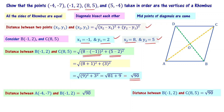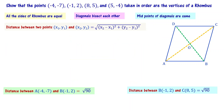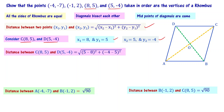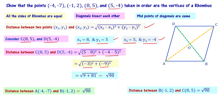Distance between B and C is also equal to square root of 90. Now consider C and D. C is 8, 5 and D is 5, minus 4. Substituting into the distance formula: square root of (5 minus 8) whole square plus (minus 4 minus 5) whole square, which is square root of minus 3 whole square plus minus 9 whole square, equal to square root of 9 plus 81, which is square root of 90.